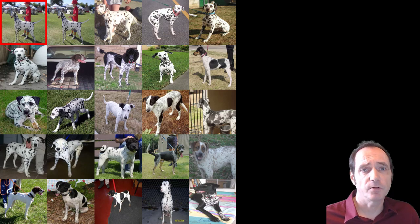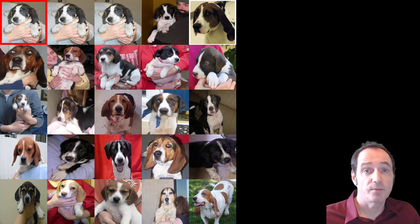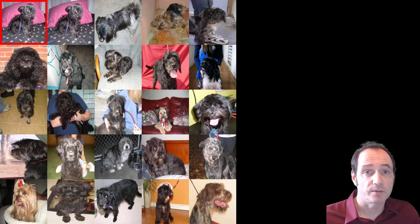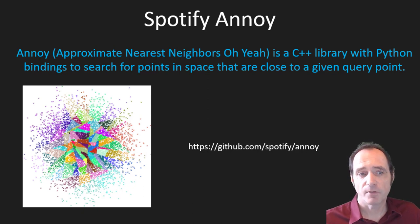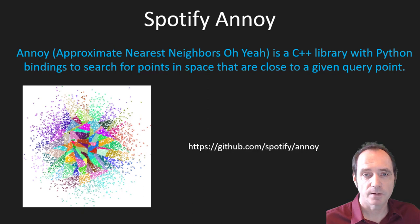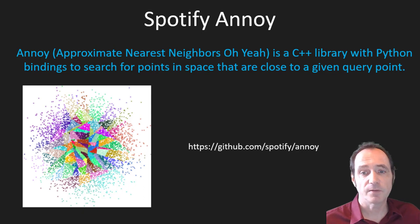You don't have to use PyTorch with Spotify Annoy — you can use a different neural network, so if you prefer TensorFlow, feel free to use that. Spotify Annoy is available on GitHub and Annoy is actually an acronym for Approximate Nearest Neighbor, but as it was developed by Spotify it's basically a C++ library that provides Python bindings, making it easy to consume from a Python project.